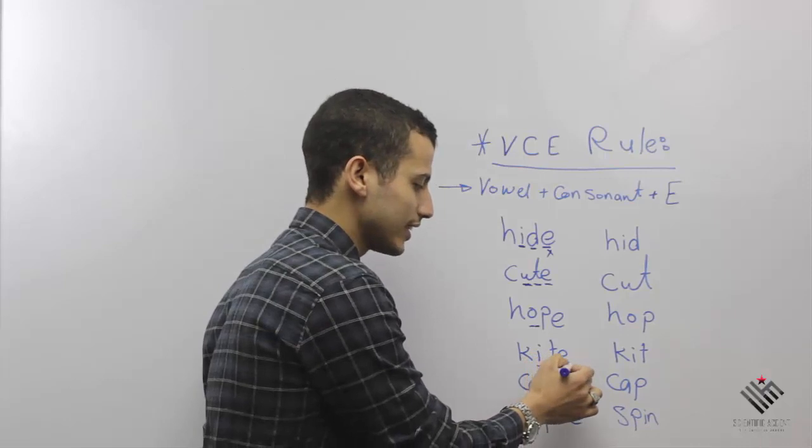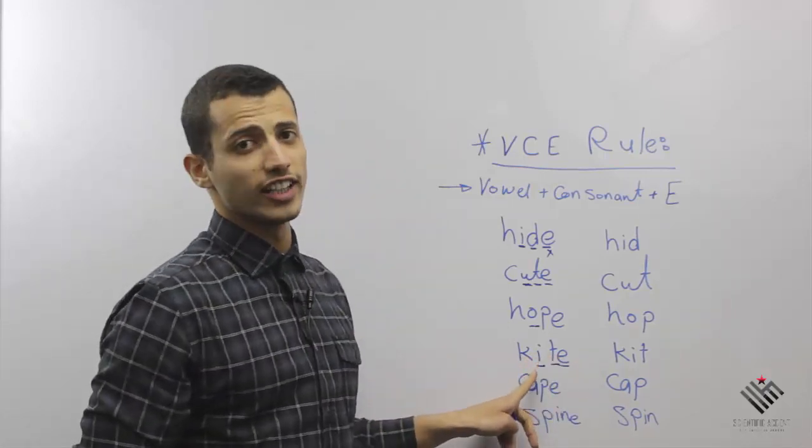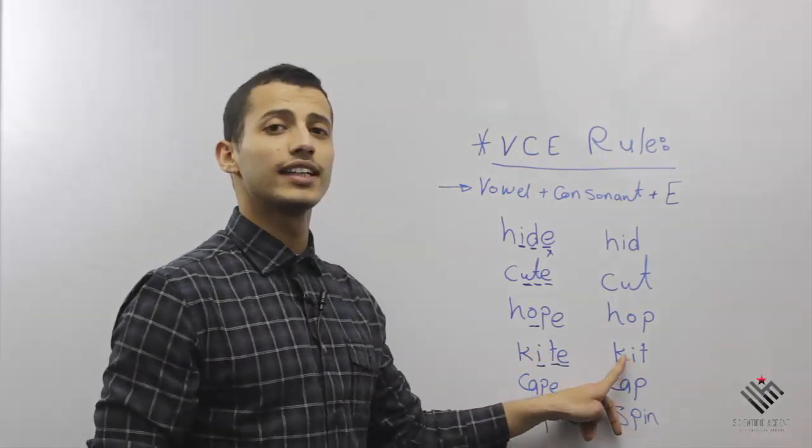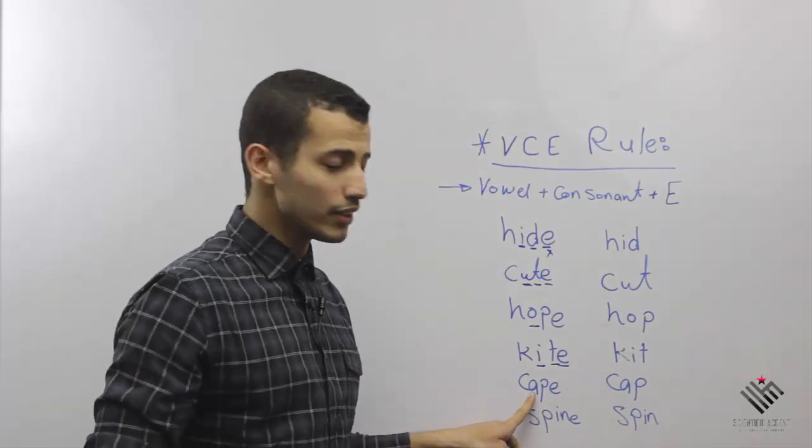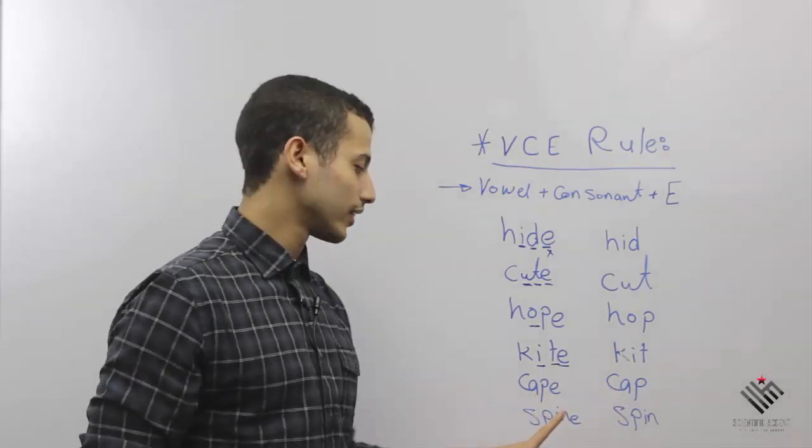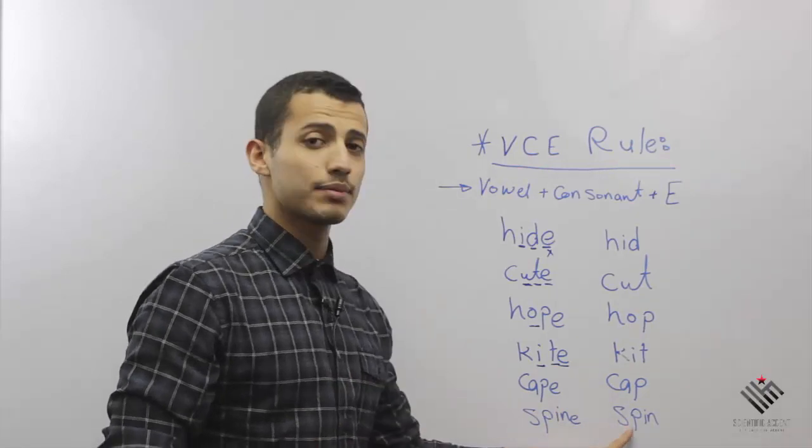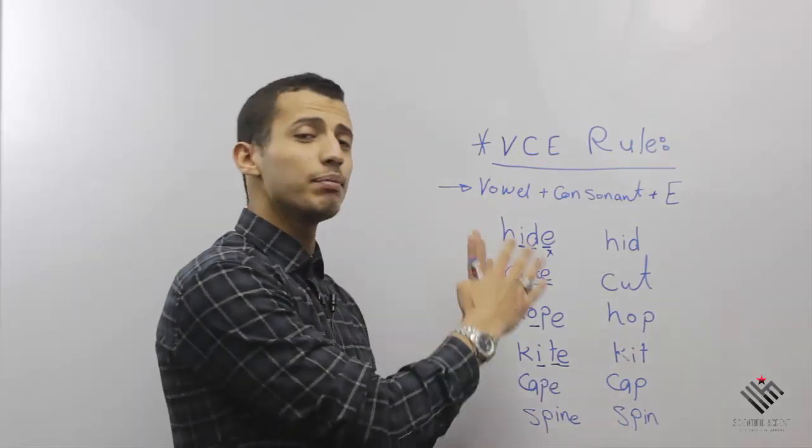Different example here. This is 'kite.' Why? Again, VCE. I, kite. Remove the E, it's going to be 'kit.' 'Cape,' 'cap.' 'Spine,' 'spin.' So the application of this rule is very essential for your American accent, and it will help you to read some of the words.